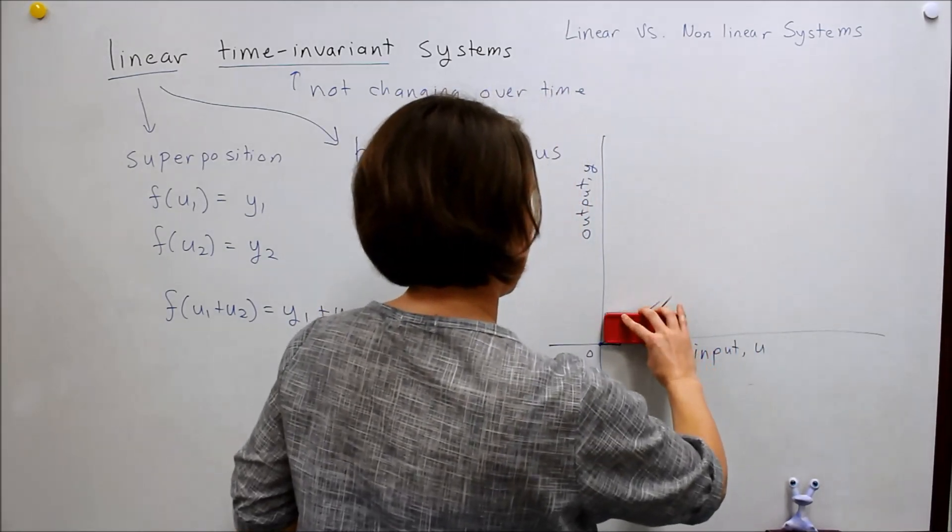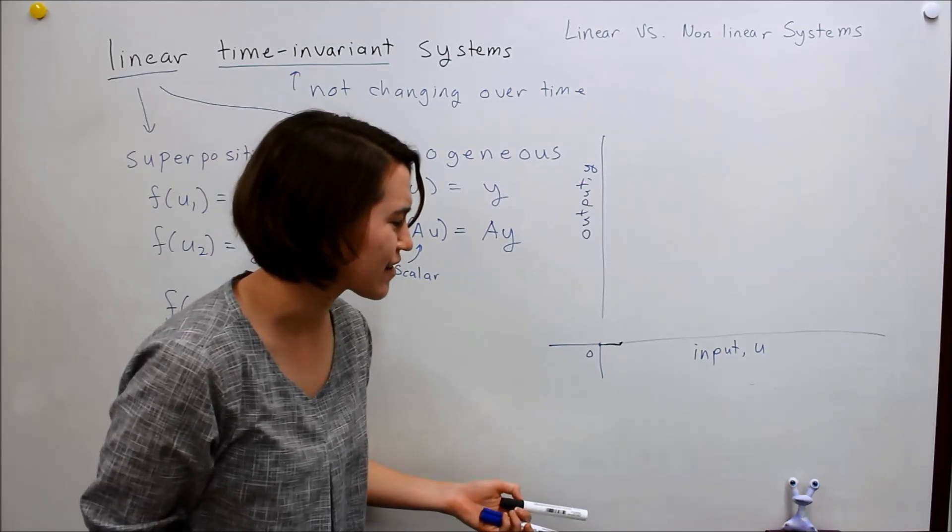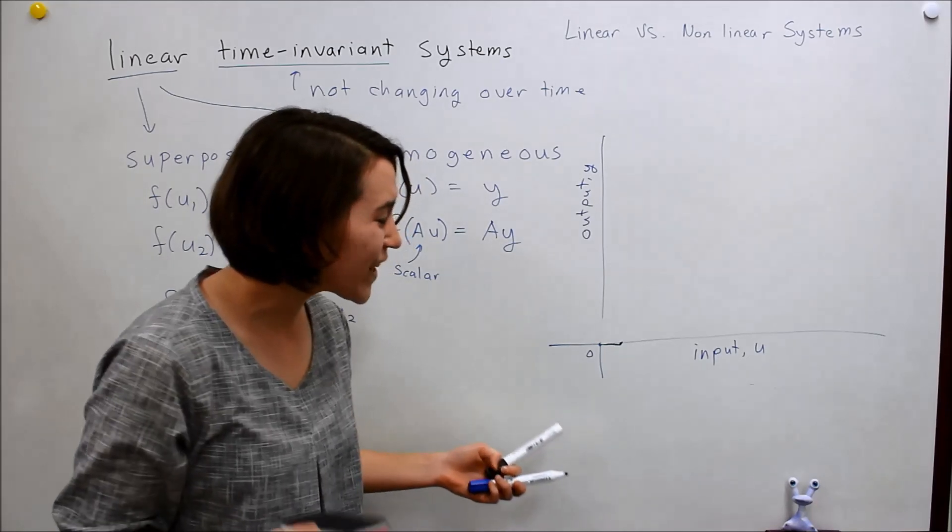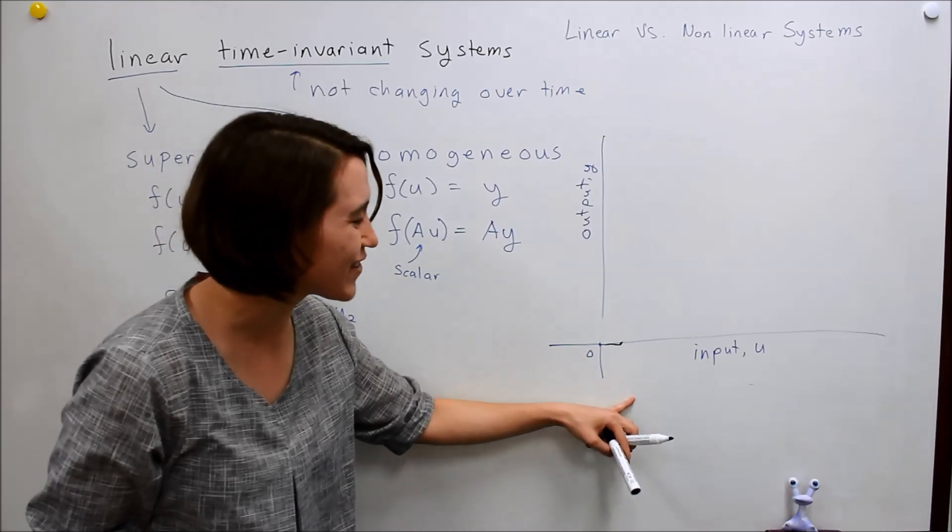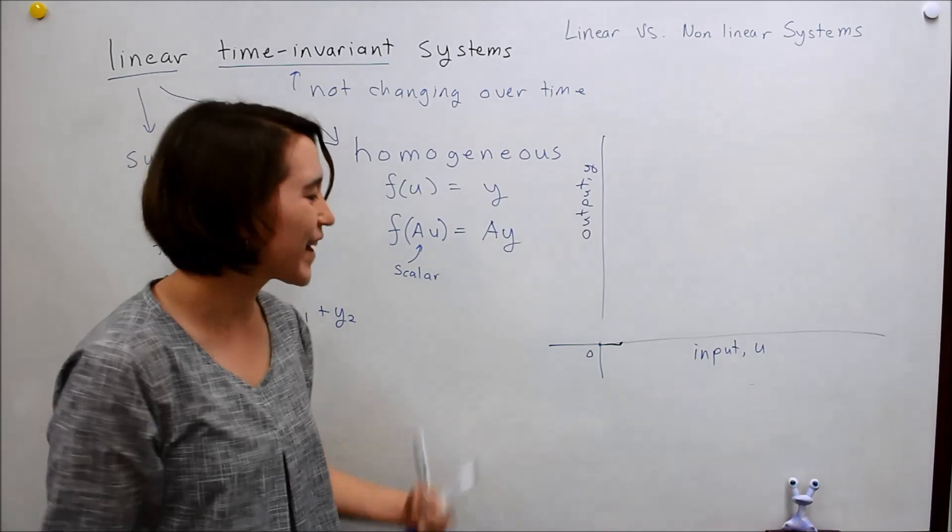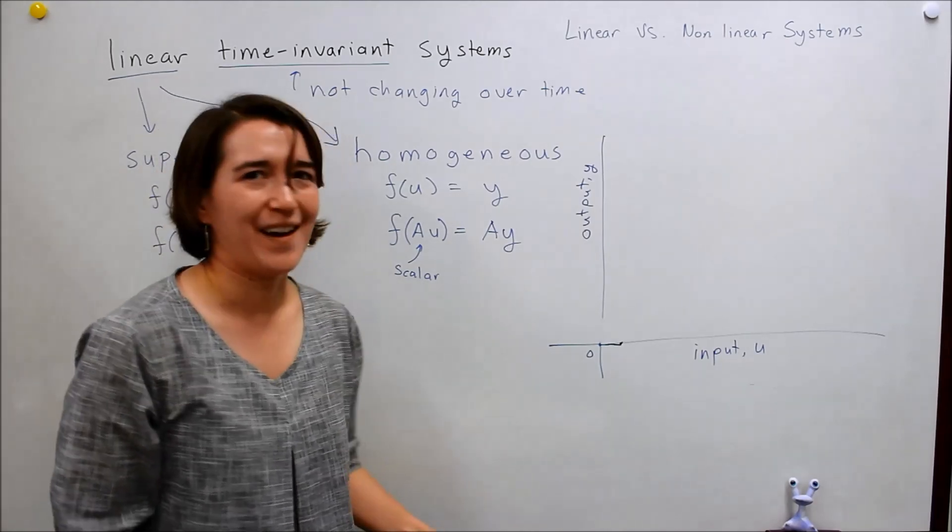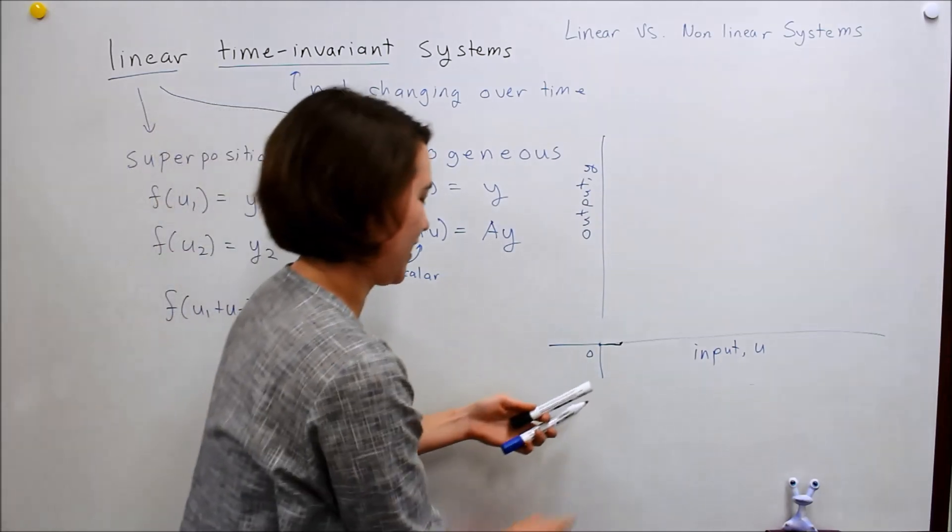So, let's think of one. Valerie, can you think of a good non-linear system? What? No! We cannot use the input as the number of drinks you've had, and the output as how fun the party is. What kind of example are you setting? Although that is a valid non-linear system. Let's do something a little different.